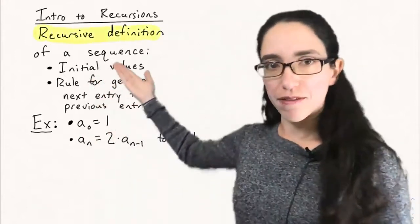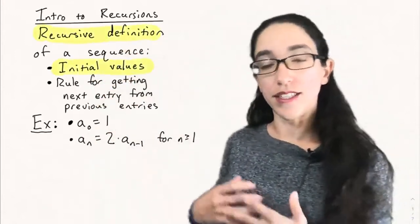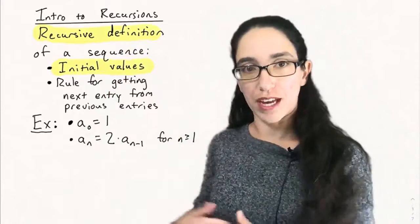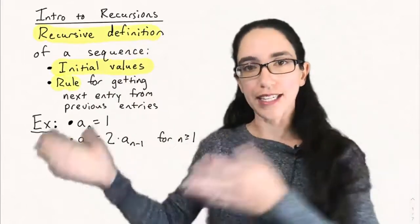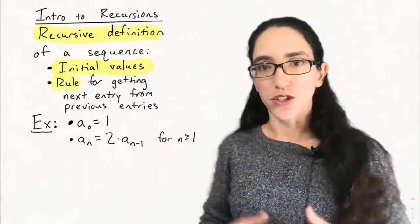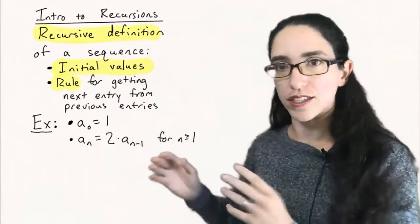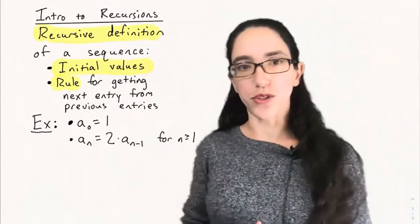A recursive definition of a sequence consists of some initial values and a rule for getting the next entry from previous entries. So you build things up one at a time starting from initial values.